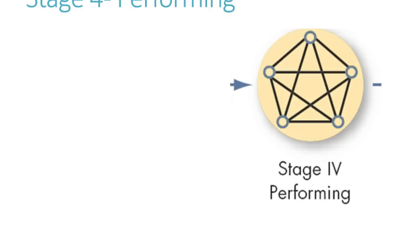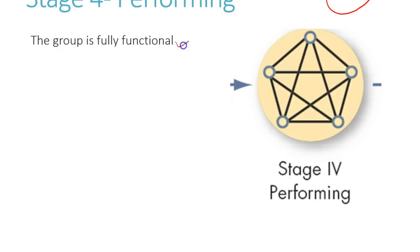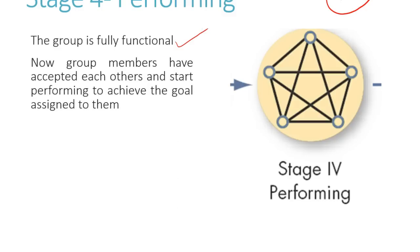Now the next stage, Stage 4, is called performing. Connectivity has started forming — everyone has begun connecting with each other. All five people have finally, at Stage 4, made the group fully functional. Group members have accepted each other and started performing to achieve a goal. Once you know each other's talents and combine them, you work as a group in coordination with each other.